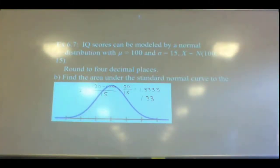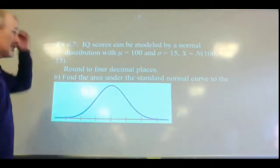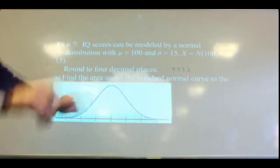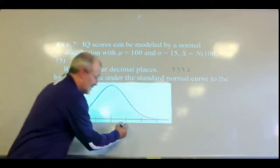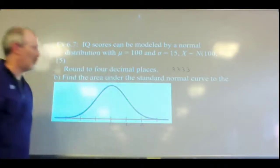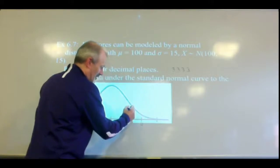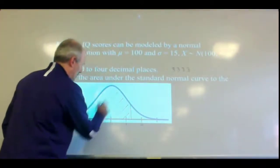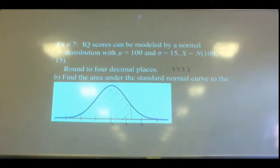Find the area under the standard normal curve to the left of Z. So we draw our picture — our Z score is 1.3333. In standard normal, zero is the center. So 1 is here, 2 is here, and approximately 1.33 is about one-third of the way between 1 and 2. We want to find the area to the left of that. We have tables for standard normal distributions, and I'll pull one up so we can use it.